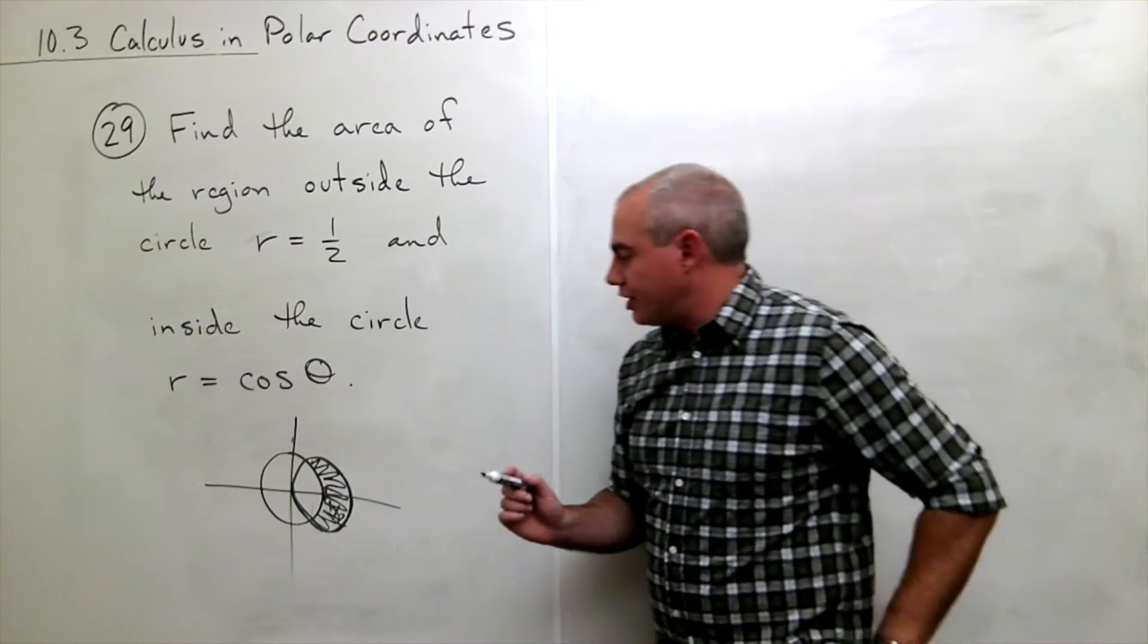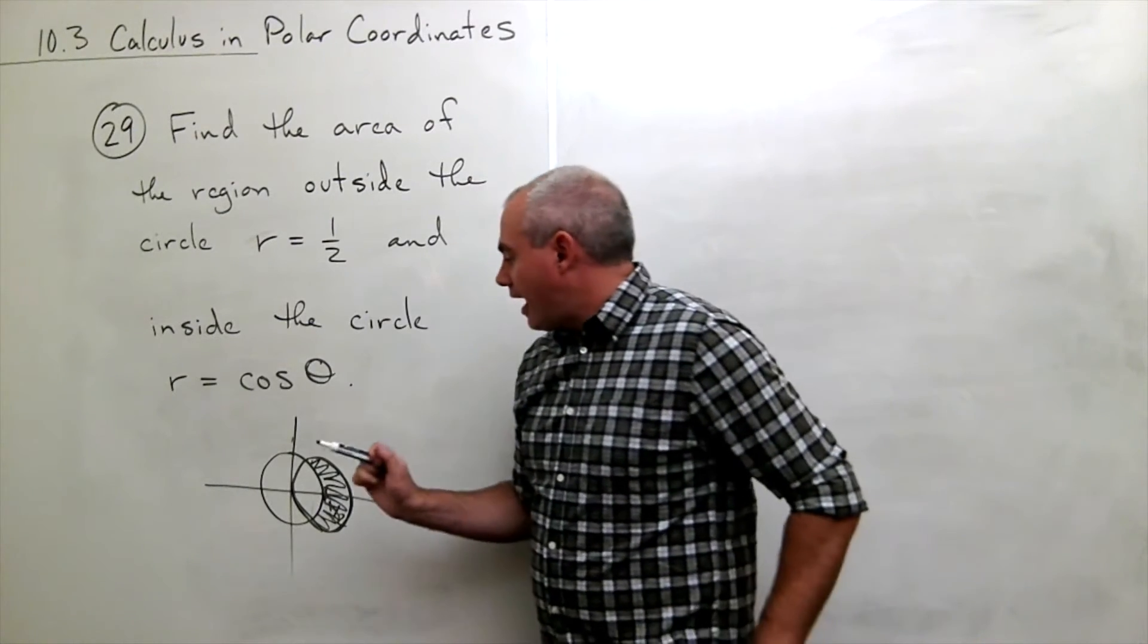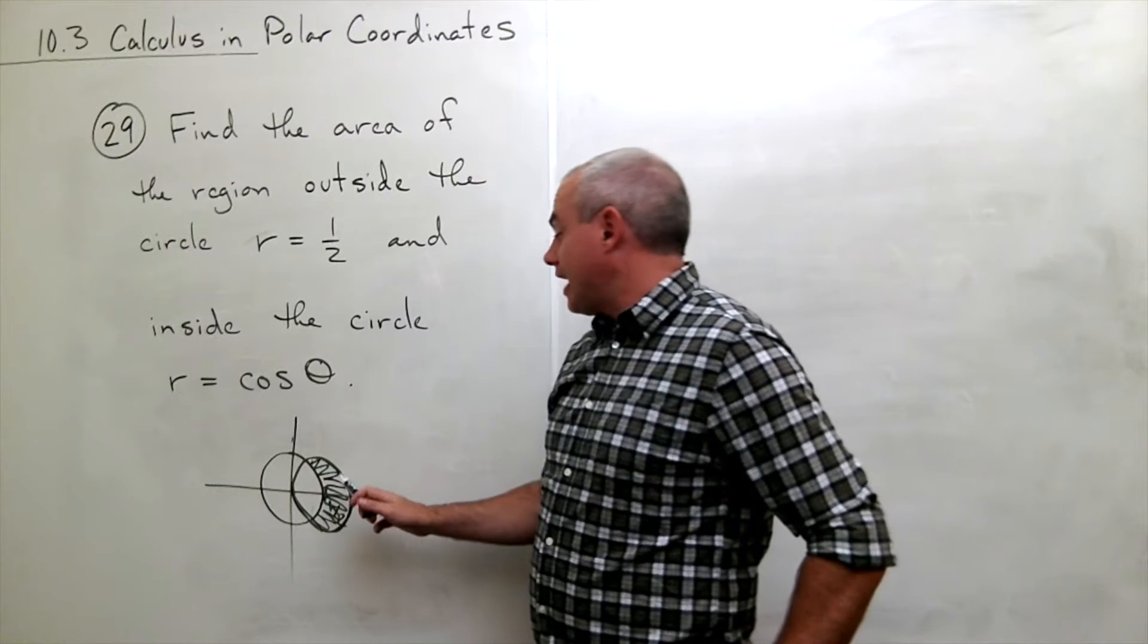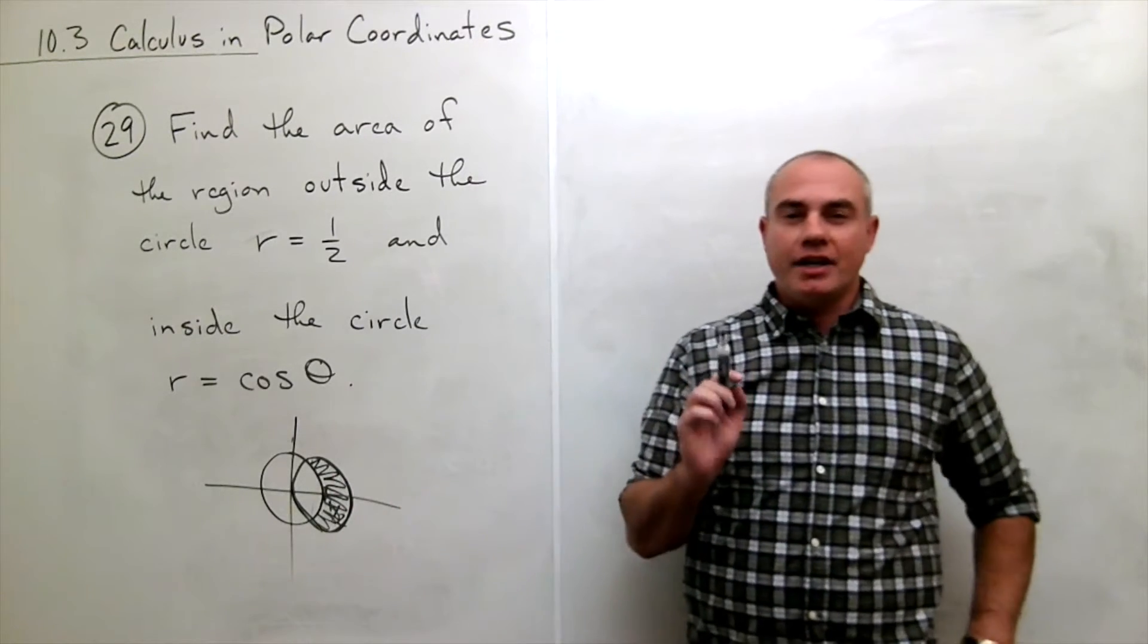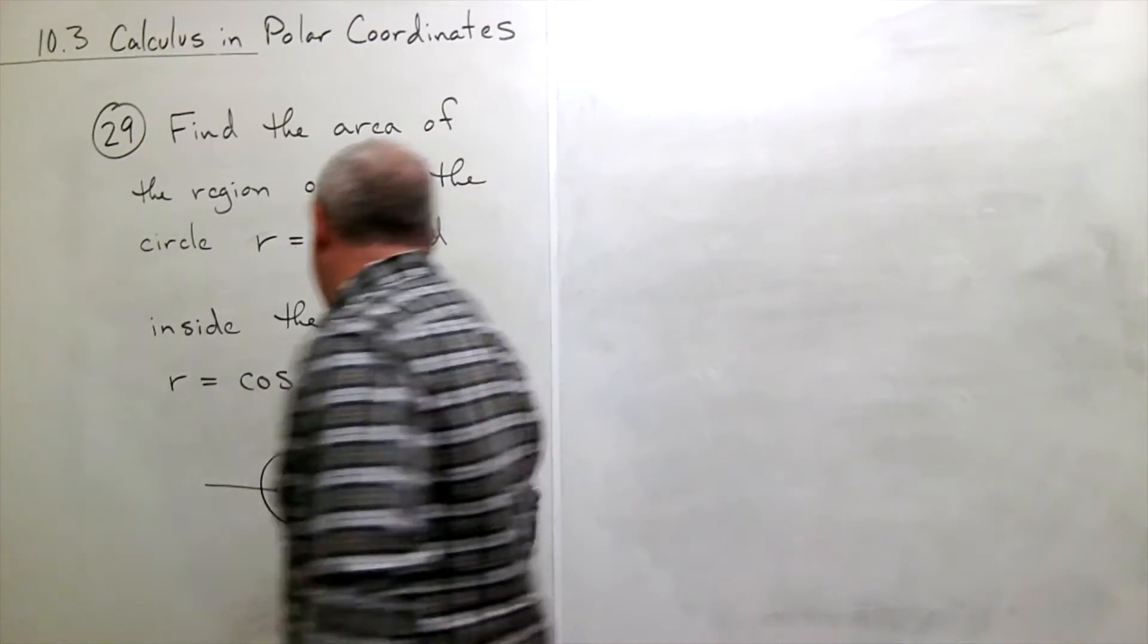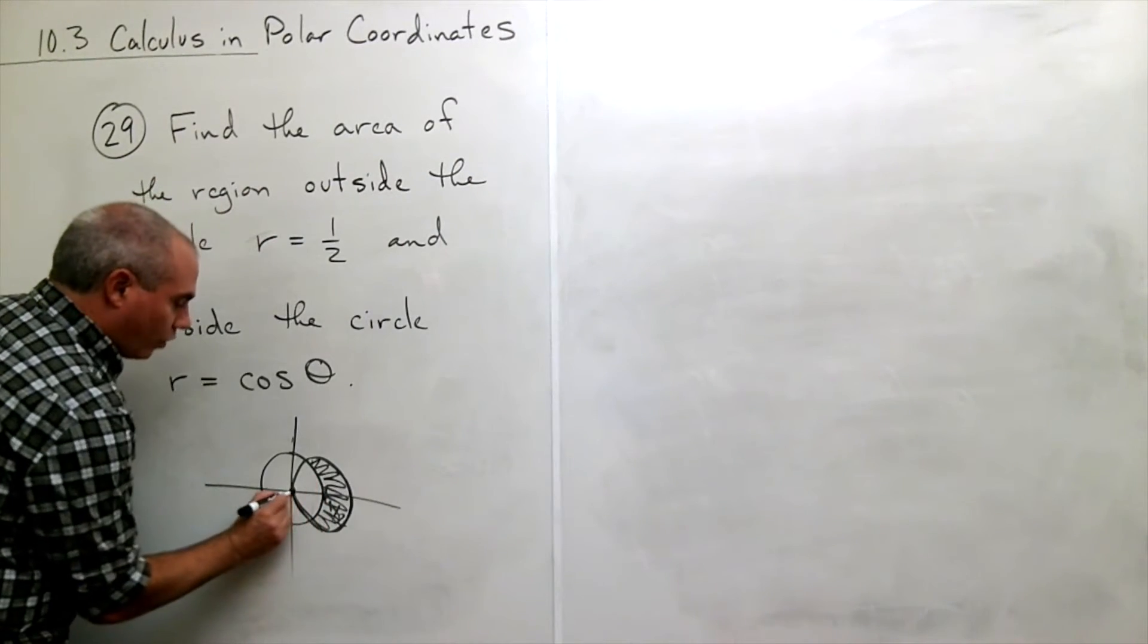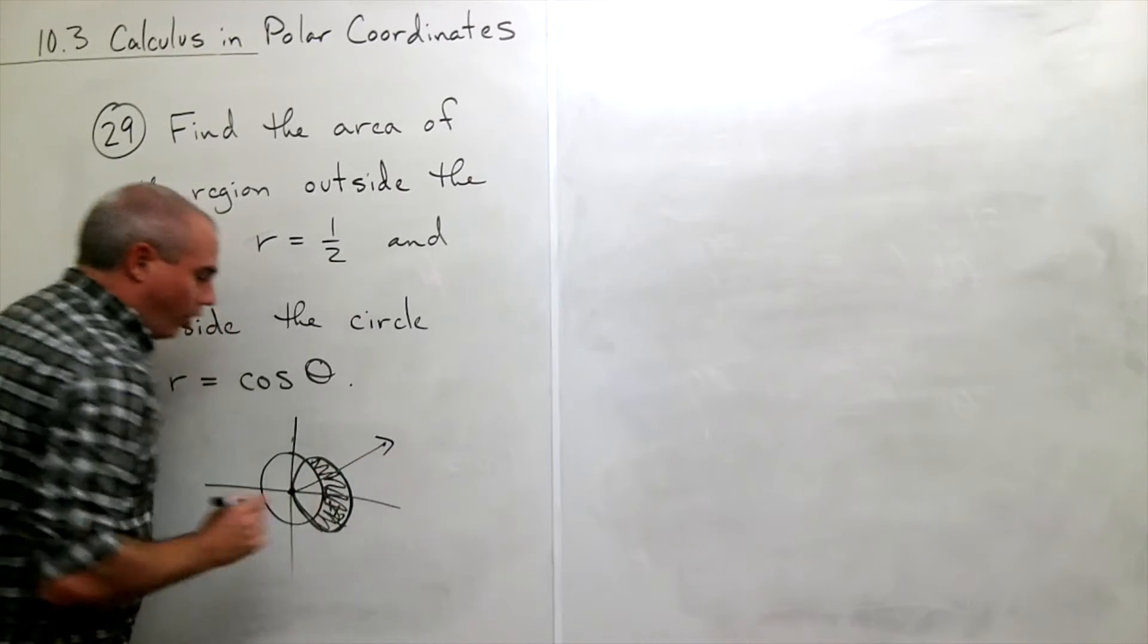So now the question is, alright, how do I find the area just in that crescent-shaped region? And I can think of it this way. If I draw a ray starting at the origin that goes out through both of these,